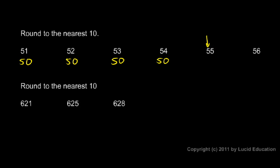Rounding 55 to the nearest ten, we look at the next digit — that's five or higher, so we round up. The five is tricky because 55 is right in the middle of 50 and 60, so it's a little ambiguous; we could round either way and either would be equally correct. The rules say that when the digit is a five we round up, so 55 rounds to 60. And 56, 57, 58, or 59 would all round to 60 as well.